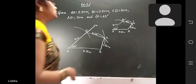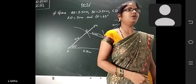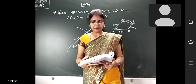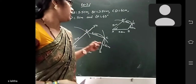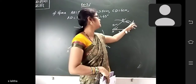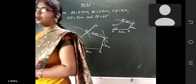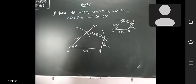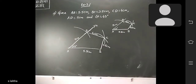Now write the construction steps. First step: draw a rough sketch of quadrilateral ABCD.